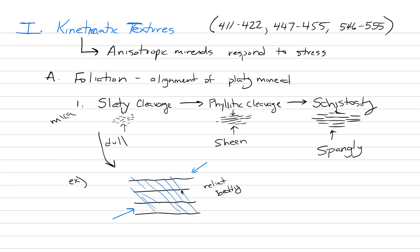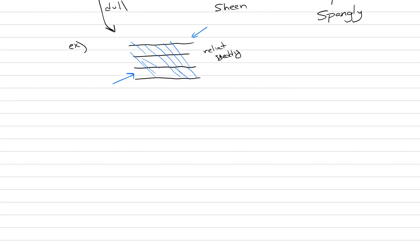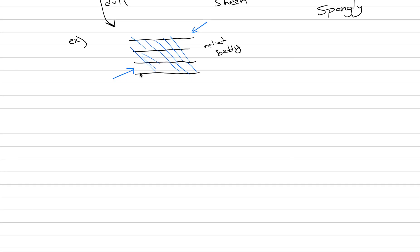This would be a place where the slaty cleavage is cross-cutting the relict bedding. The micas end up aligning and making the rock weak, which is why you can use that weakness to make slate as a building stone. Now, when you take that cleavage, and you actually start to fold it by increased metamorphism, it's called a crenulation. So, a crenulation is an additional texture. It has to do with cleavage, but it's when you have a folded cleavage.